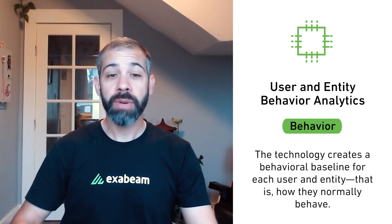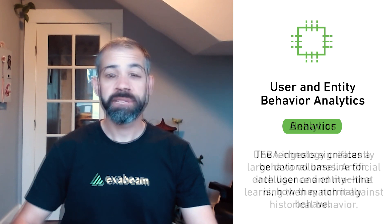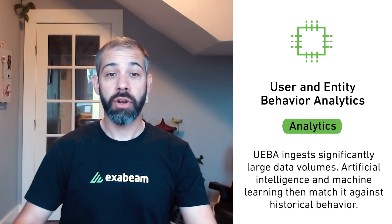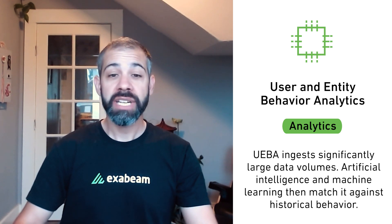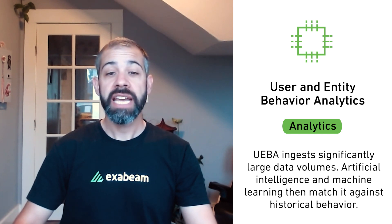Behavior: the technology creates a behavioral baseline for each user and entity — that is, how they normally behave. Any baseline deviation could point to a security event. Analytics: UEBA ingests significantly large data volumes. Artificial intelligence and machine learning then match it against historical behavior to call out anything resembling abnormal behavior. It can do this across thousands of users, entities, and peer groups.